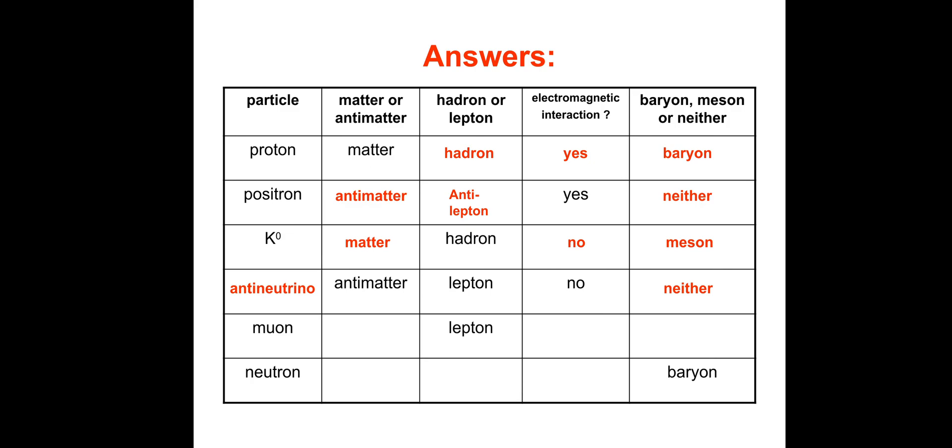Muon: Matter or antimatter? Matter. Electromagnetic interaction? Yes, because muons are mu negative or mu minus. Baryon, meson, or neither? Neither, because it's a lepton.